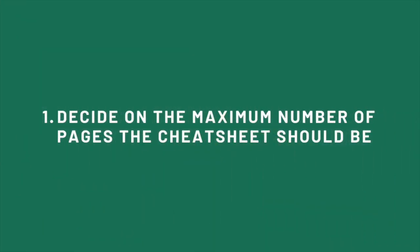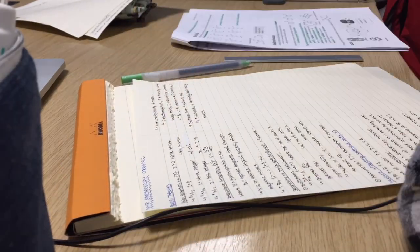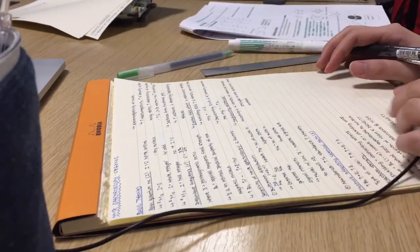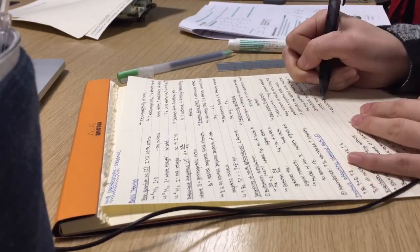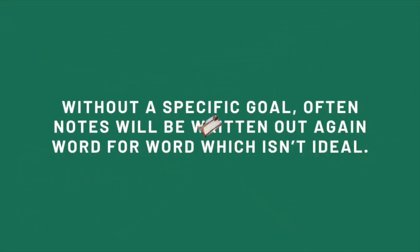Before writing up my cheat sheet, I decide on a maximum number of pages I want the cheat sheet to consist of. It's good to know what you're aiming for before you start. Otherwise, often without a specific goal in mind, you won't be as decisive on what information to keep and what information to leave out when writing them out. And instead what often happens is you write out the notes again word for word, which definitely isn't ideal.